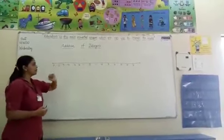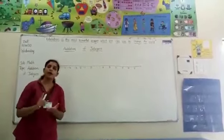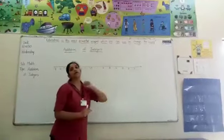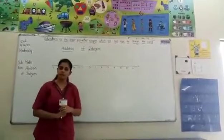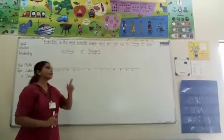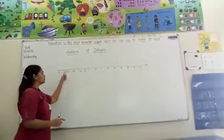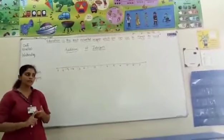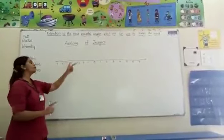Before we learn addition of integers on the number line, you have to keep two points in mind. When you are adding positive integers, you have to move towards the right side of the number line, where the positive integers are. When you are adding negative integers, you have to move towards the left side. Keep these two points in mind.